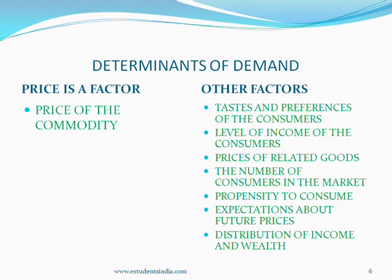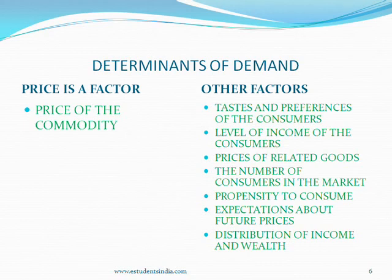Determinants of Demand. Demand changes as a result of changes in price. An individual's demand for a commodity depends on the price of that commodity and also on other factors. Individual demand for a commodity can be expressed mathematically as: QD = F(PX, I, PR, T, A), where PX is the price of the commodity, I is income of the individual, PR is the price of related commodities, T is taste and preferences of the individual, and A is advertisement expenditure made by the producers of that commodity.